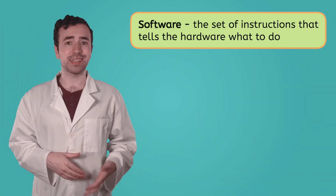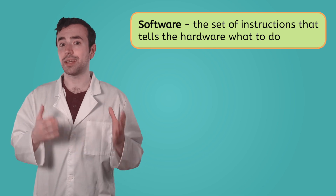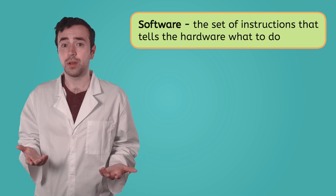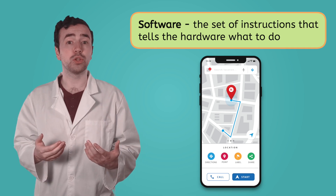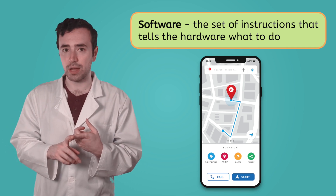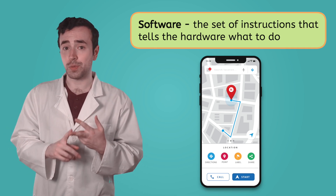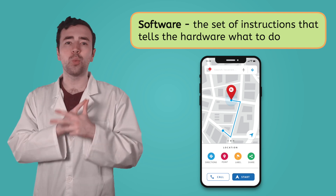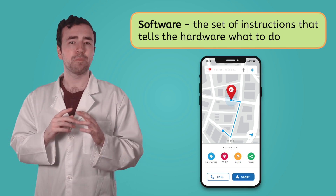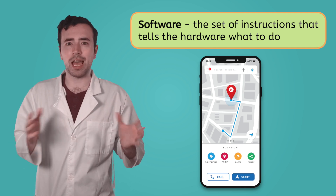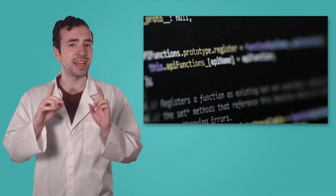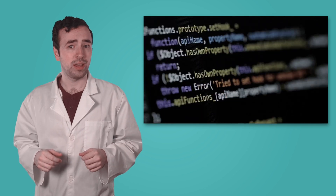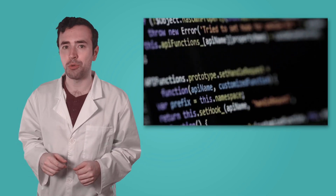Software, on the other hand, is the set of instructions that tells the hardware what to do. For our directions app, the software includes the instructions for calculating routes, for when to read out directions, and for responding to what the user inputs. But computer engineers can't just type instructions into computers and expect them to do what they're asked — engineers need to speak to the computers in their own language. That language is code.